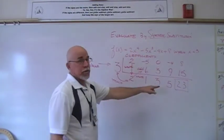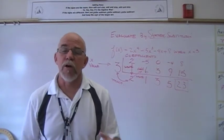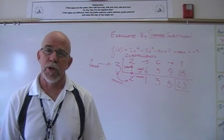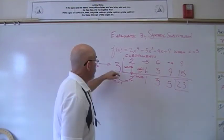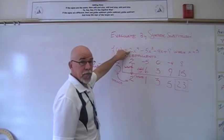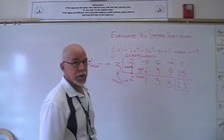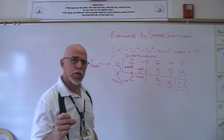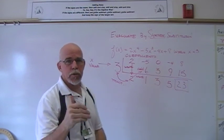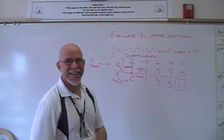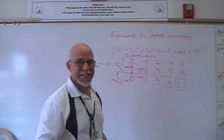This last number is the value of that polynomial function when x is 3. When I plug 3 in here for x, I get 23. When I directly substitute it, that's how you do it with synthetic: faster, quicker, easier, doesn't waste as much tree bark. We are the Ask Academy.